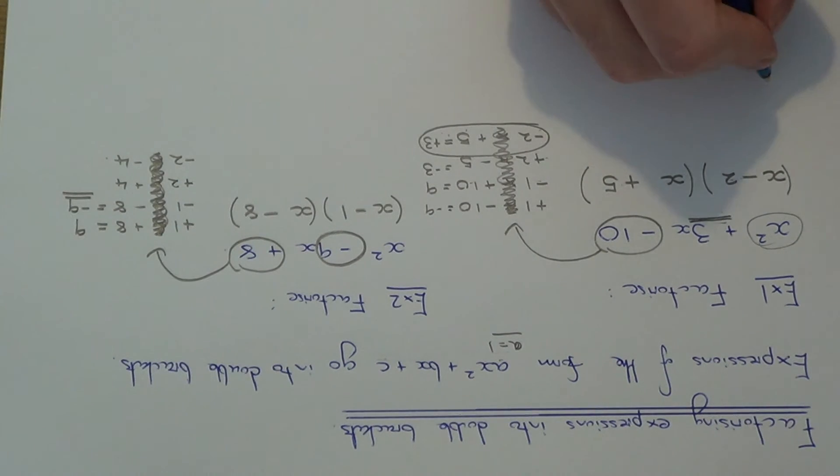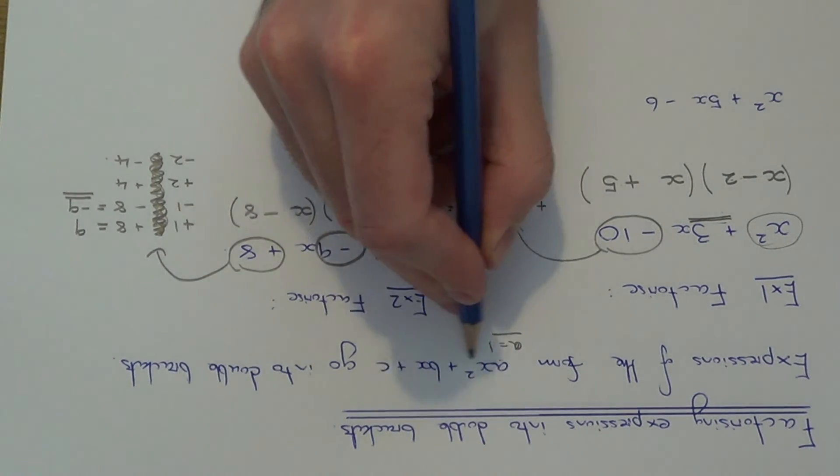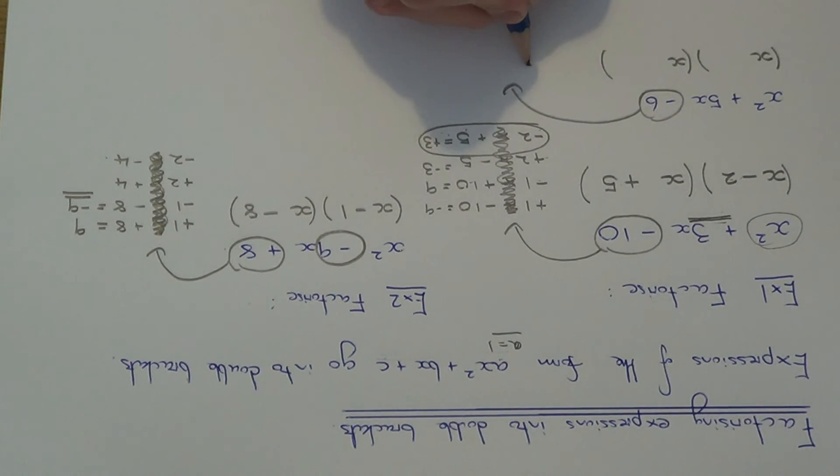Let's do one more example then. So this time let's factorize x squared plus 5x minus 6. So again, we know it takes the form up here. So it's a double bracket expression. So if you fill in the first terms again, x and x. So this time we have minus 6 at the end. So write down all the numbers which multiply to give minus 6. So we could have plus 1 times minus 6, minus 1 times plus 6, minus 2 times plus 3. Or we could have plus 2 times minus 3.